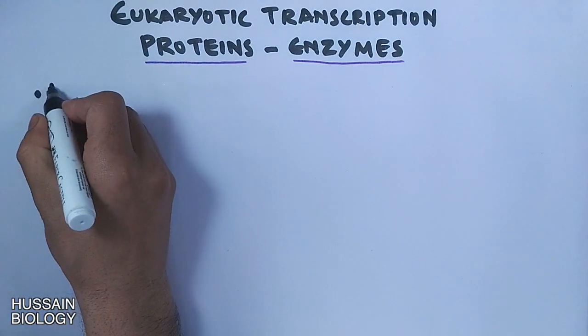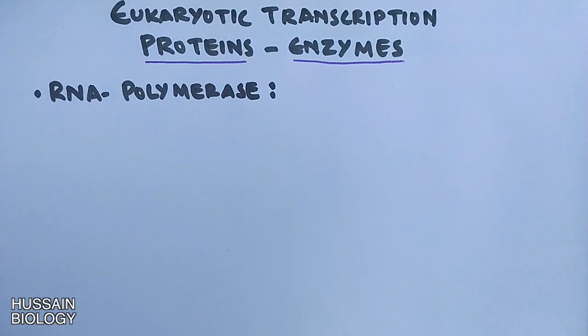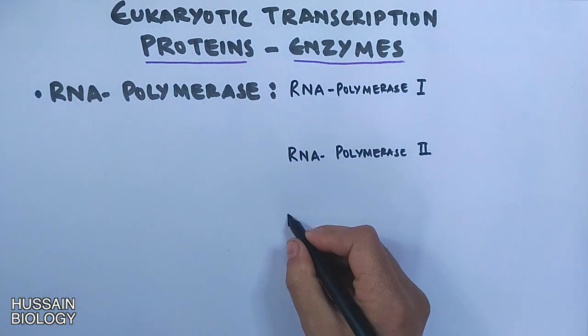First of all we have RNA polymerase enzyme, which is the primary enzyme in transcription. Unlike prokaryotes which have only one RNA polymerase enzyme, eukaryotes have 3 different RNA polymerases: RNA polymerase 1, 2, and 3.